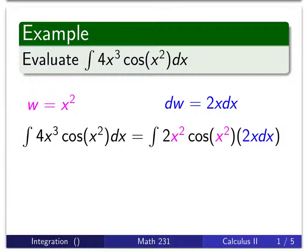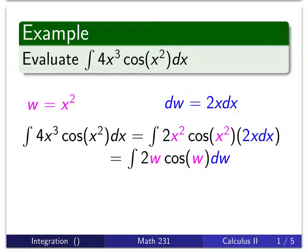So just following the color-coded, we make our substitution, changing things in terms of w. We end up with the integral of 2w cos(w) dw.